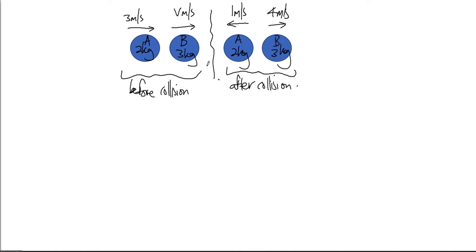First of all, I'm going to make everything that moves towards the right as positive, everything that moves towards the left as negative. So using the formula p equals mv, I'm going to find the momentum.